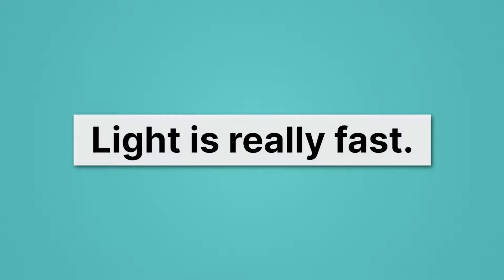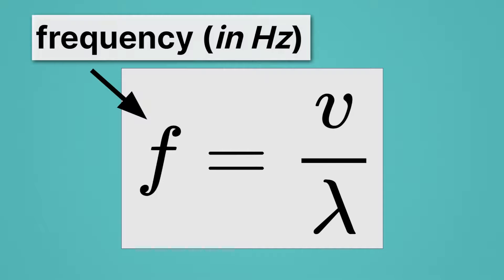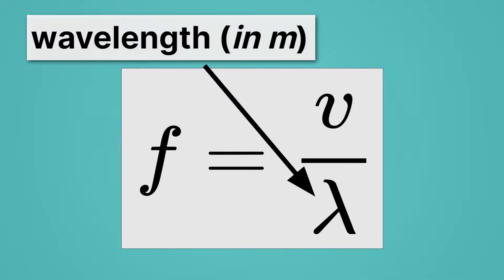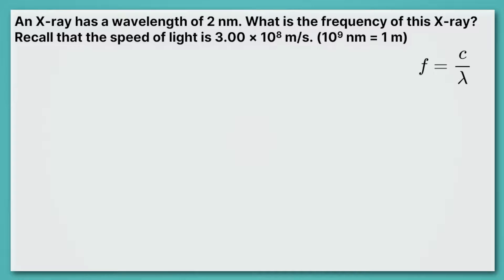Light is really fast, and you'll remember there's actually a relationship between how fast a wave moves and its frequency. This is the equation we can use to calculate frequency based on the velocity of the wave. So here f is frequency, typically in hertz, and wavelength is down here in meters. This v stands for velocity. Because we're dealing with the speed of light, we'll just replace that with a c. So frequency is equal to c over lambda. This problem says an x-ray has a wavelength of 2 nanometers. What is the frequency of this x-ray?